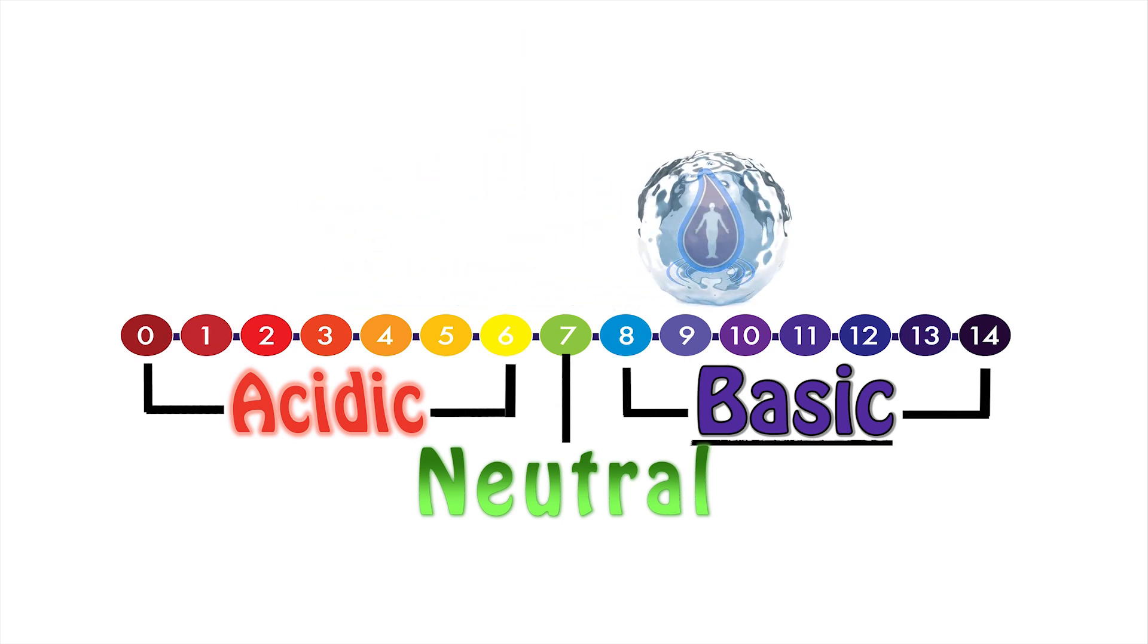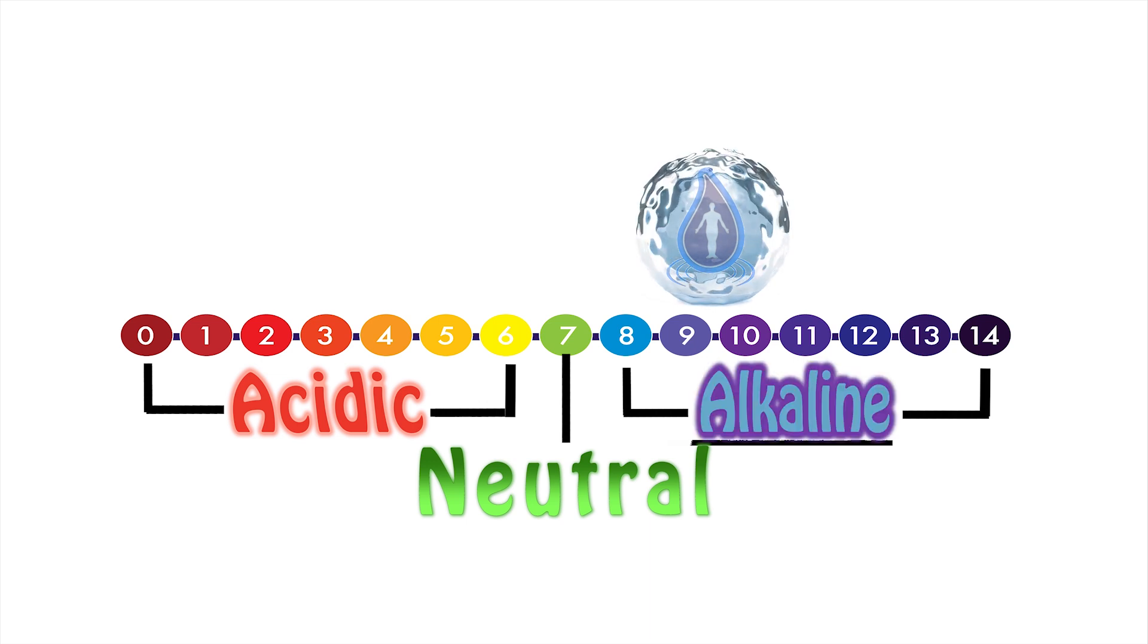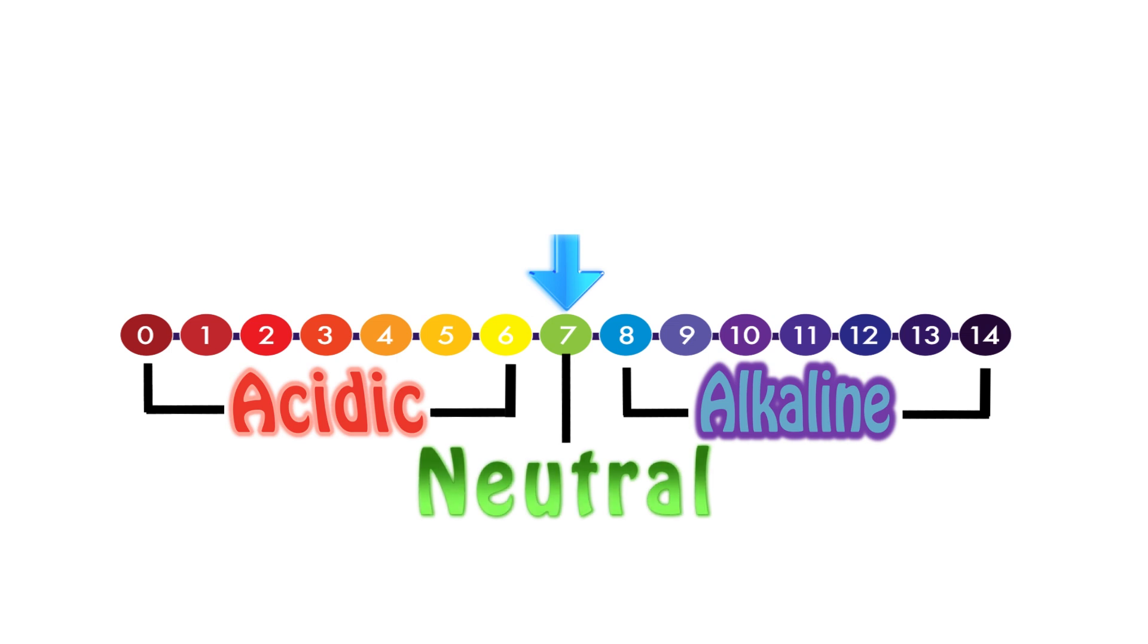The word basic is synonymous with the word alkaline, so we will use these words interchangeably. The pH scale reads from 0 to 14. The middle number in green is 7, which represents neutral or balanced. 7 is neither acidic nor alkaline. Anything lower than 7 is acidic. Anything higher than 7 is alkaline.